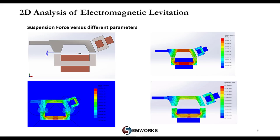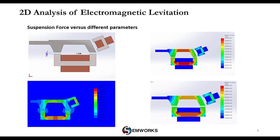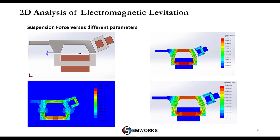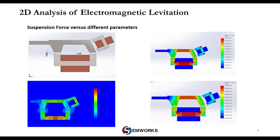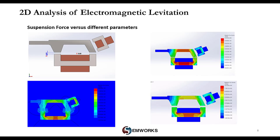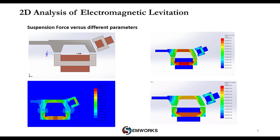We performed parametric analysis where the air gap distance along the Y direction is varied. Magnetic field results are computed for each scenario — the field increases when the air gap becomes smaller. Fringe vectors and streamlines are post-processing options to check field results and better understand system behavior.